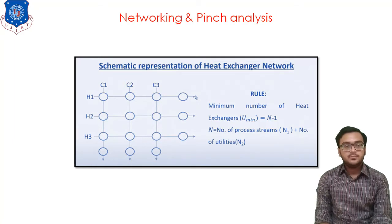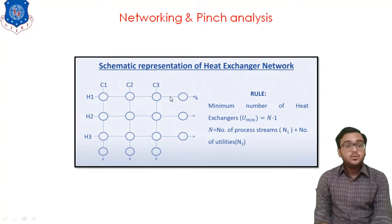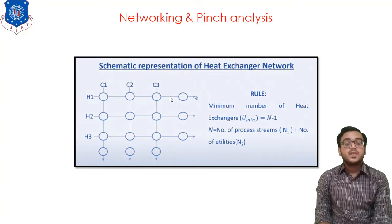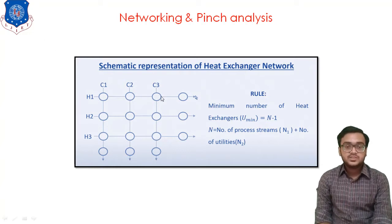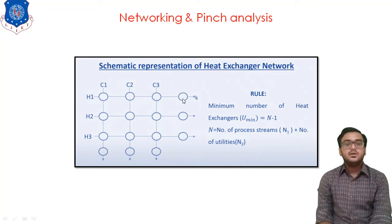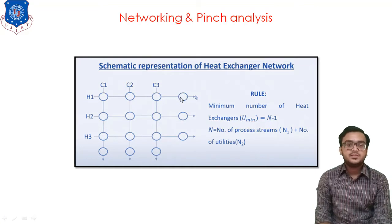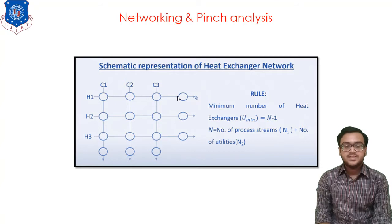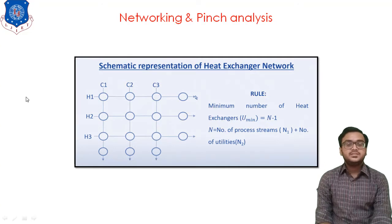Likewise, we have lots of streams H2 and H3. We require to arrange all streams in such a way that mutual heat exchange is possible between the streams, and we should require a minimum amount of external utility — hot utility or cold utility. The thumb rule is: the minimum number of heat exchangers required equals N-1, where N equals the number of streams plus the number of utilities.